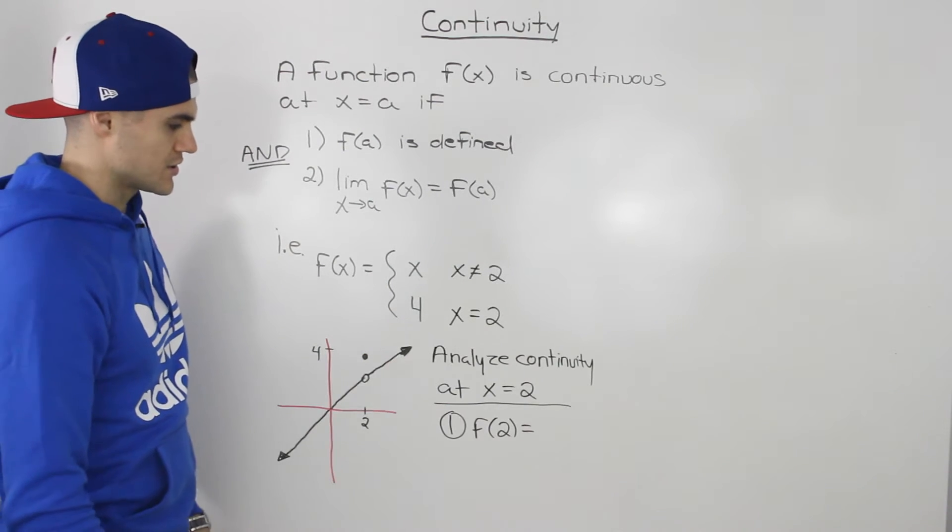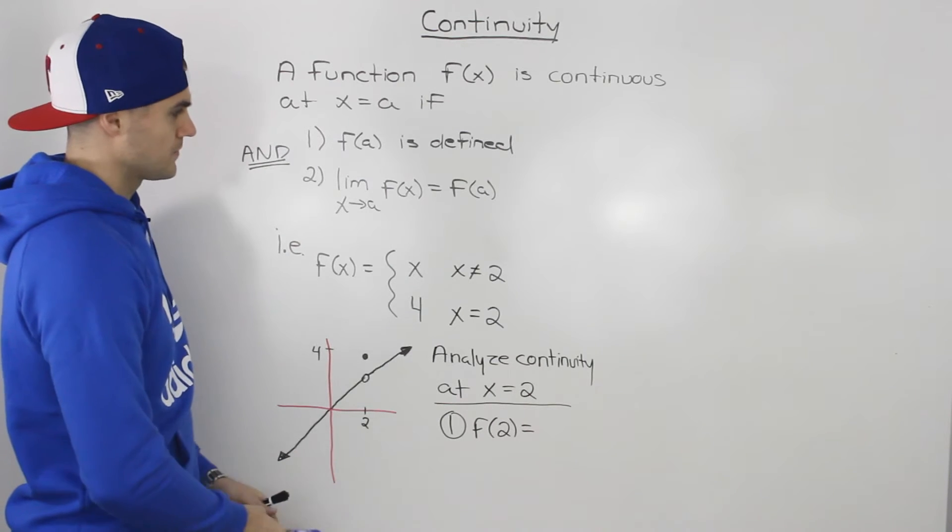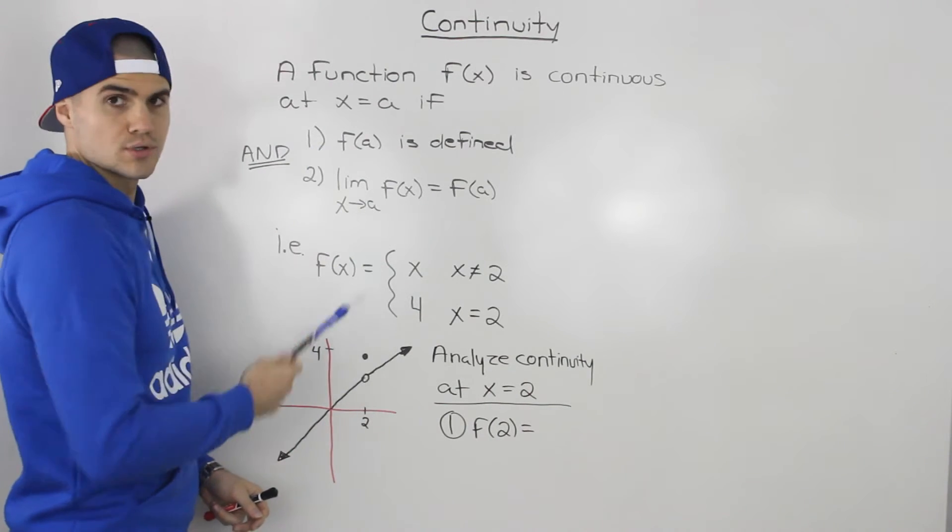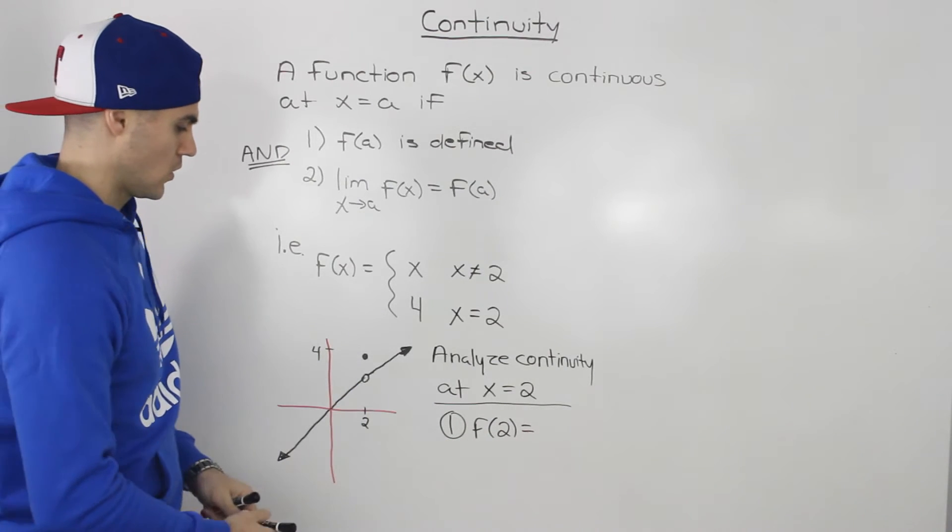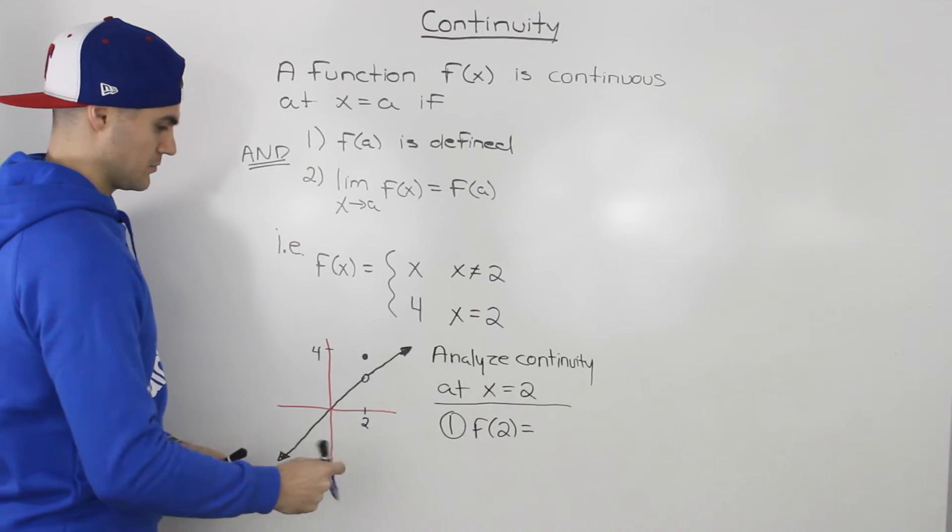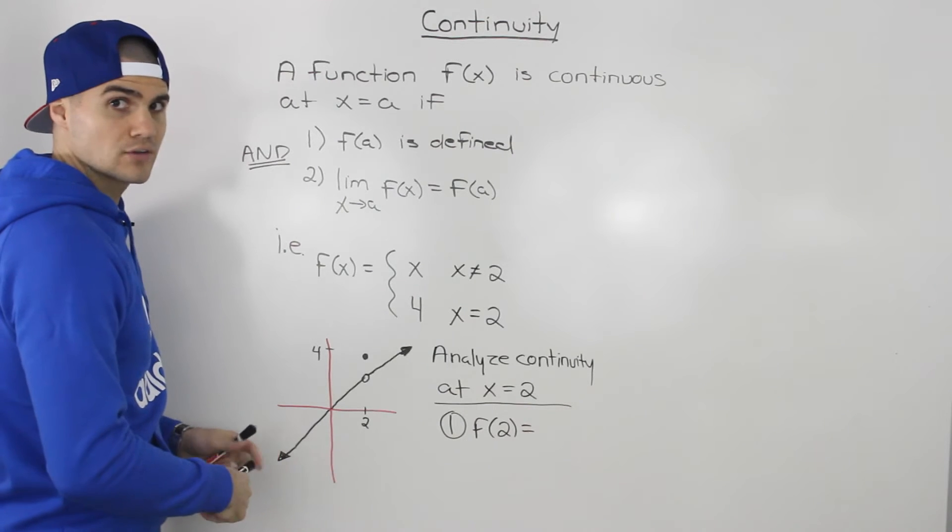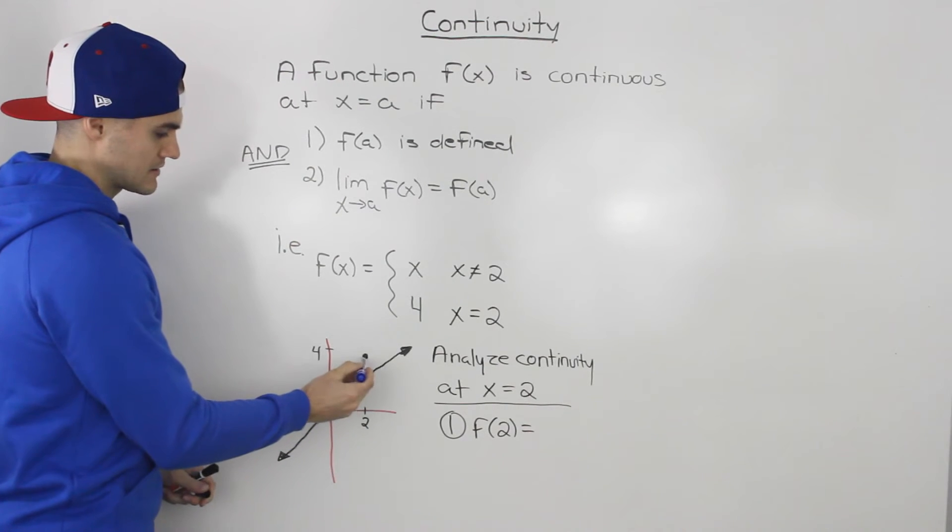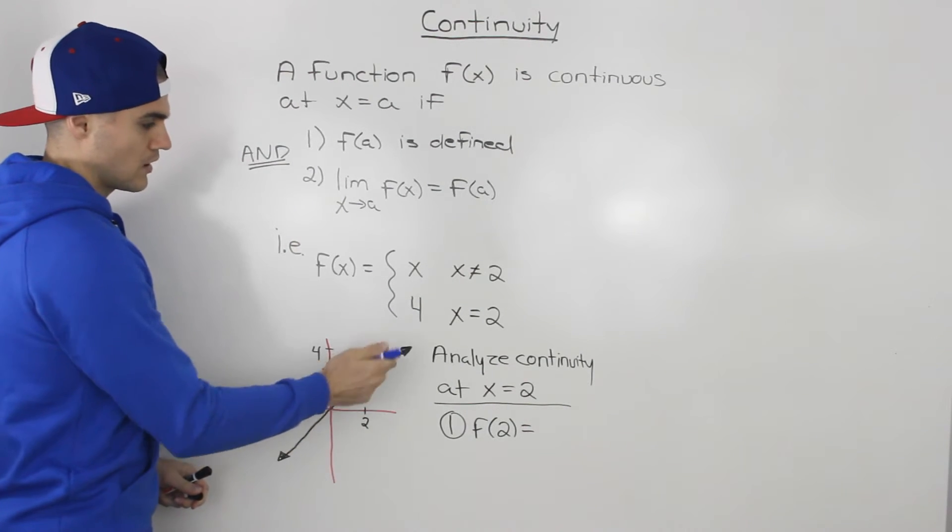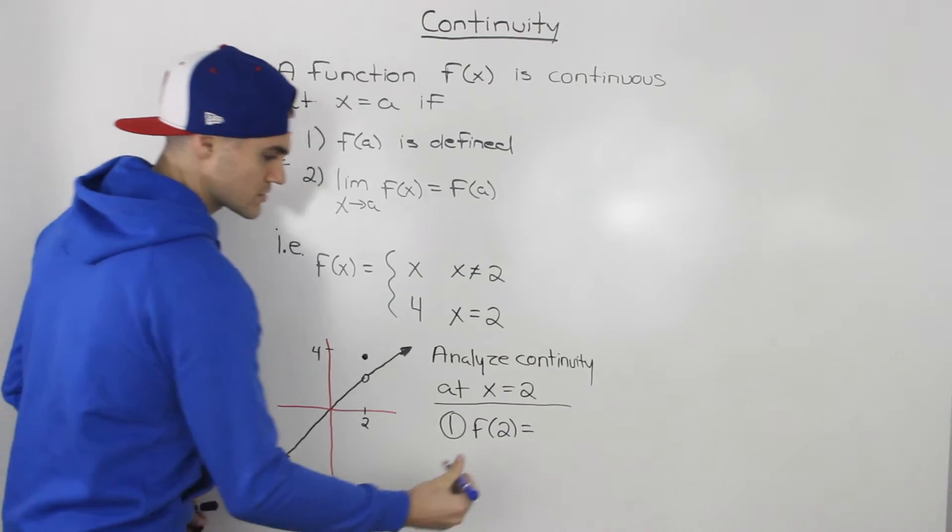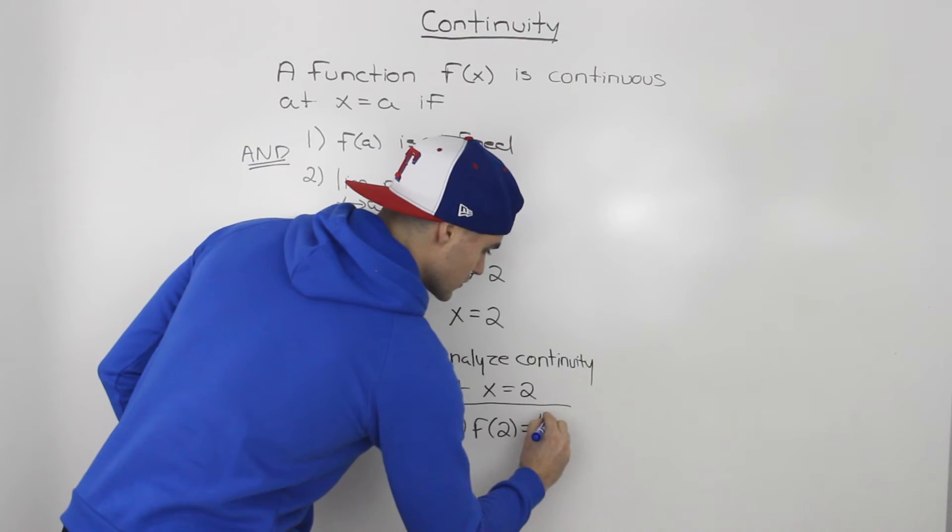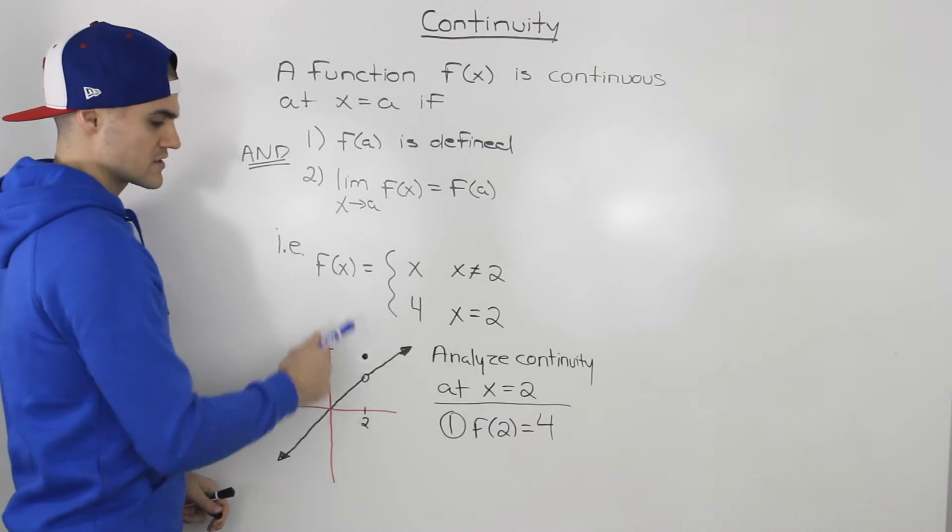So if we're going to analyze the continuity at this x value of two, we have to go over these two conditions. So the first condition, let's figure out what f of two is. Well, f of two, really simple. It's basically the y value that the function is defined at, and it's defined at a y value of four. When x is equal to two, y is equal to four. So we know that f of two is equal to four for this function.